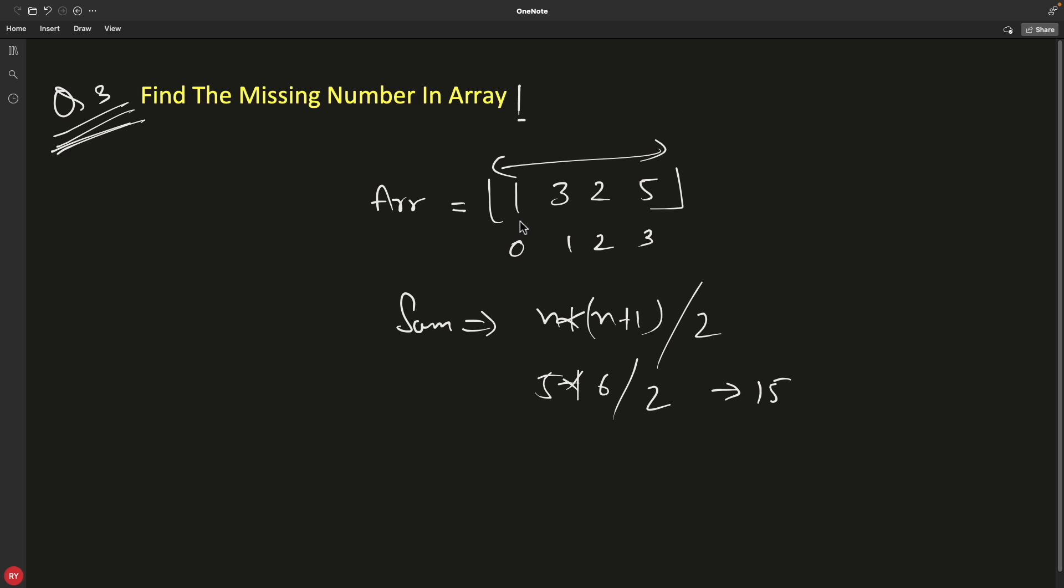Then you just go over this, keep adding all these numbers which will be 11, subtract these two numbers and you will have 4.